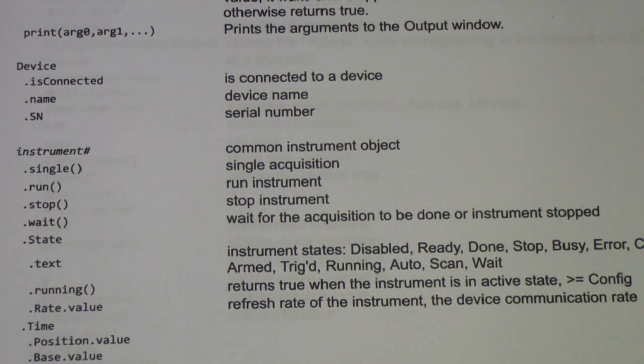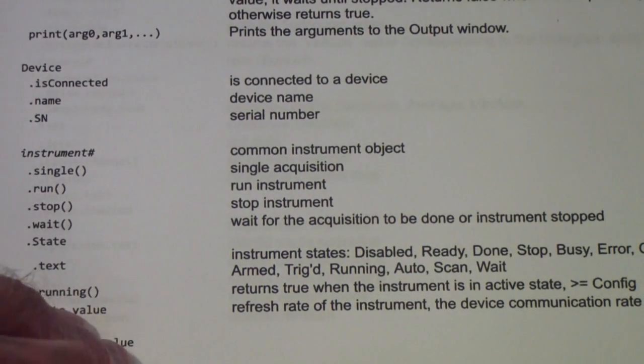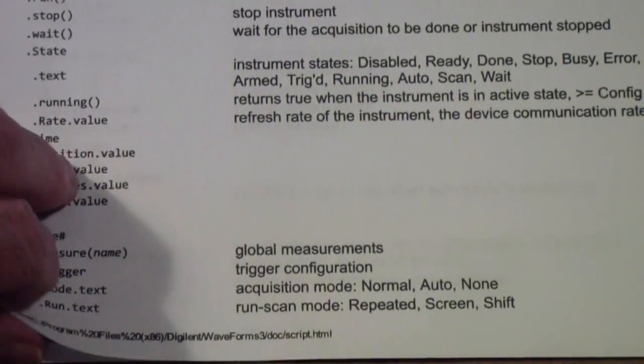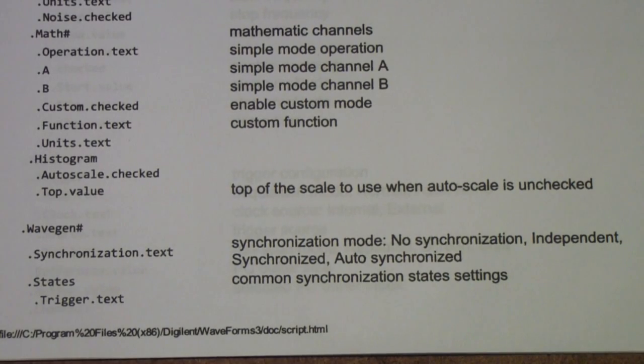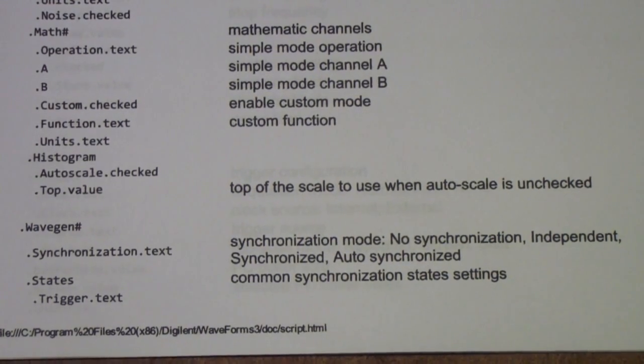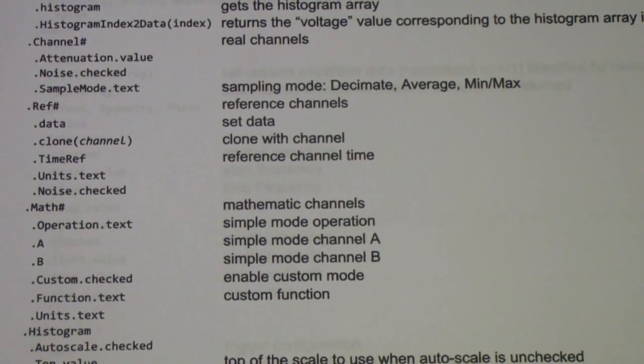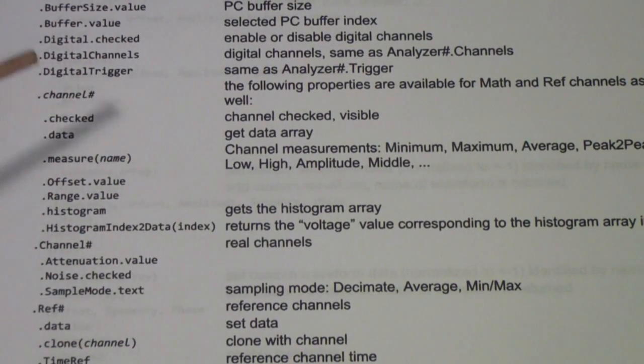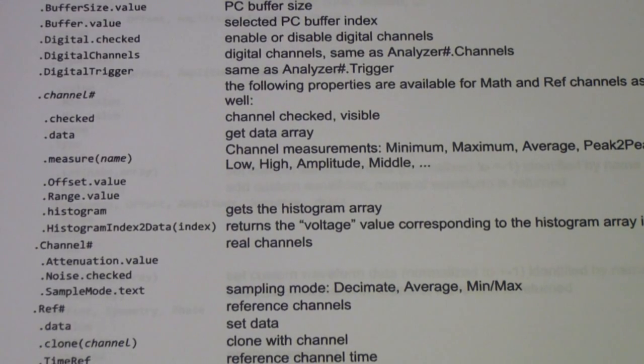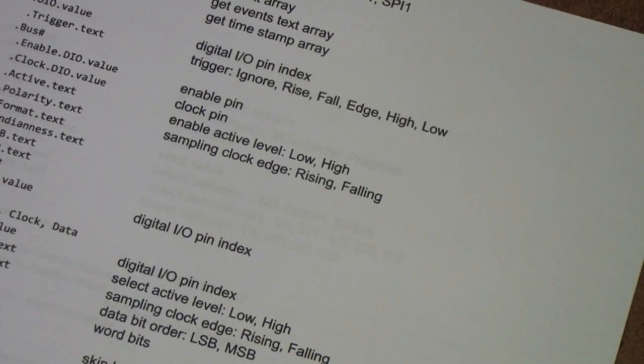You may notice that you begin with an instrument which has an instrument number. In this case the instrument is, for example, a scope. So you have a scope number, and then within that scope number you can have a variety of sub-functions, including in this case a channel.